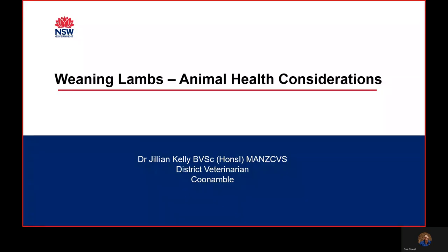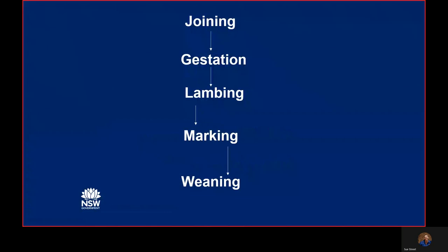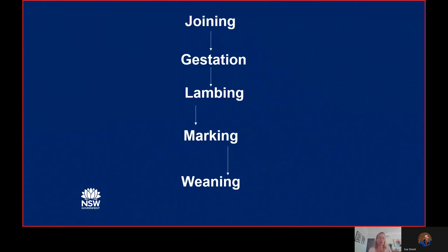I'm going to speak today on weaning lambs, the animal health considerations, and some of the disease problems you can run into around weaning time. The process of weaning actually starts way back, even when we're planning to get ewes in lamb — through joining, gestation, interlamming, through marking, and then finally weaning. Weaning is like the icing on the cake, but a lot of what's done in the lead-up can influence how well weaning goes and the survivability of your weaners. Frustratingly, sometimes I get called in to poor-doing weaners or weaners with disease, and it can be tricky to sort out because the problems occurred well back in the process.